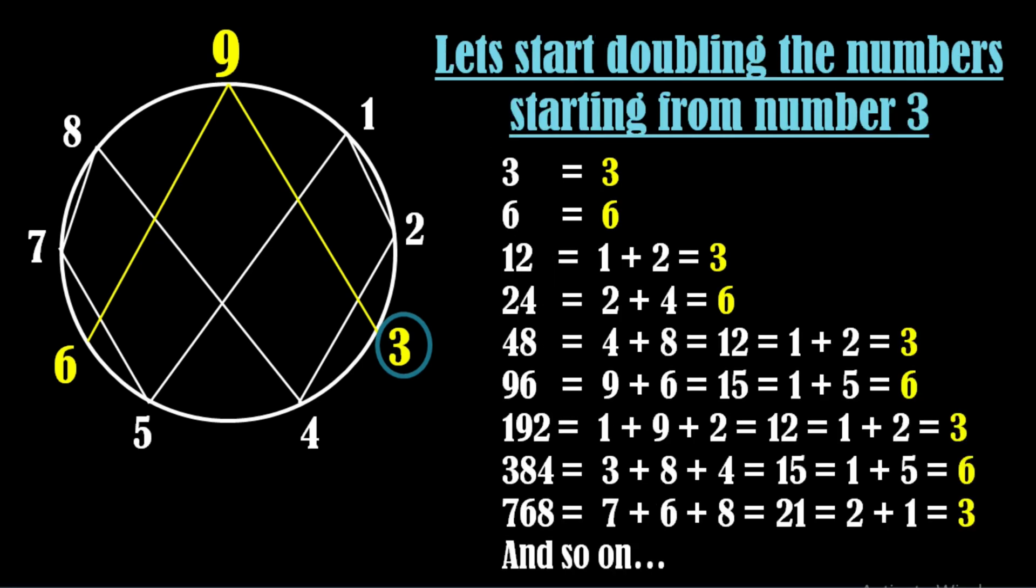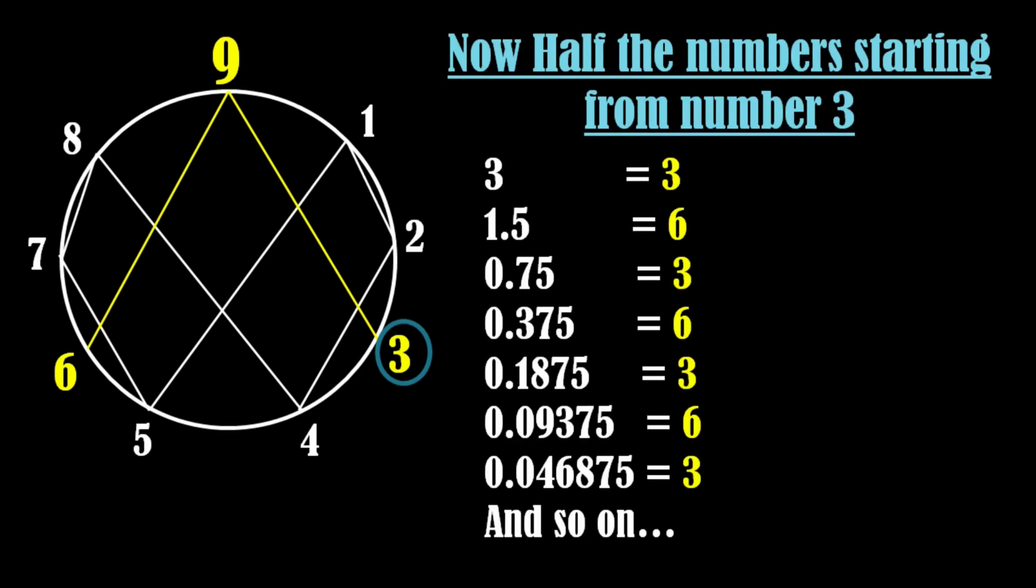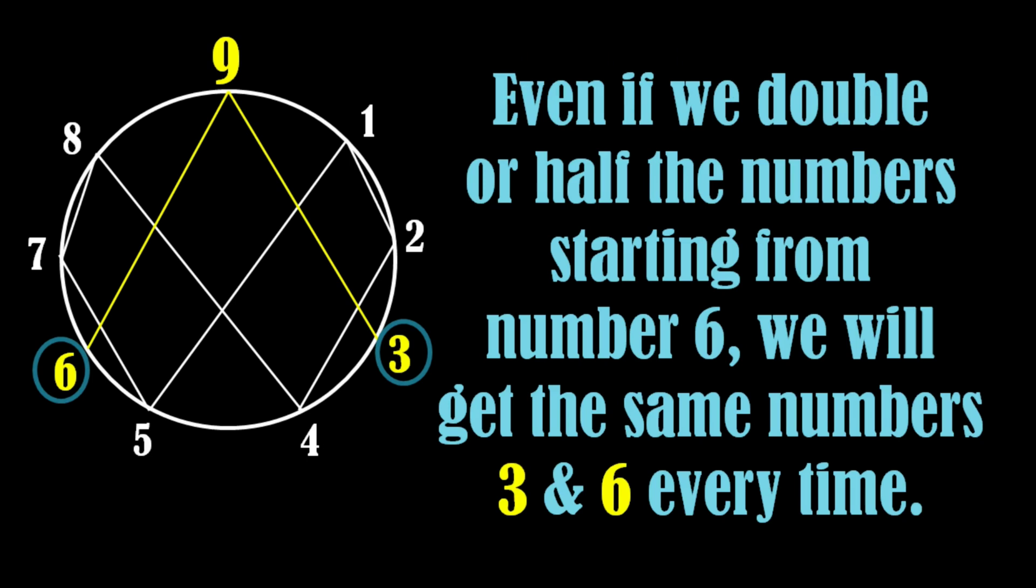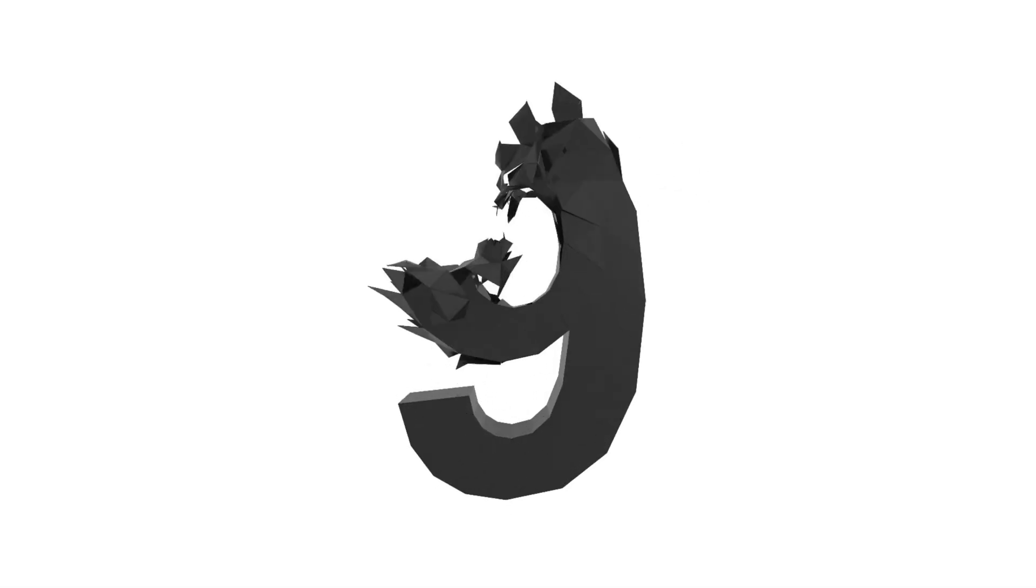This time also we get the same numbers 3 and 6. Hence, whether we double or half the numbers, if we start with number 3, we get numbers 3 and 6 only. The same pattern emerges even when we double or half the numbers starting from 6. However, it's worth noting that number 9 is absent from the sequence once again.